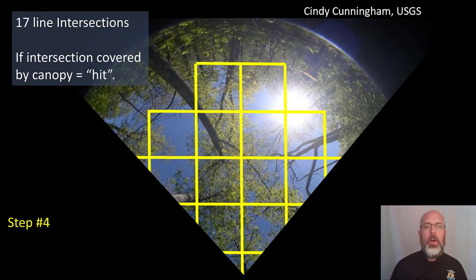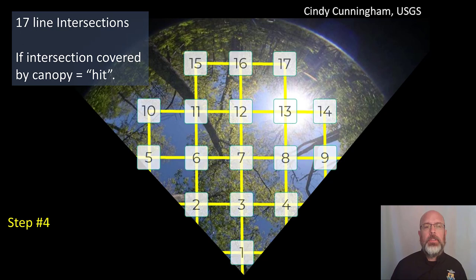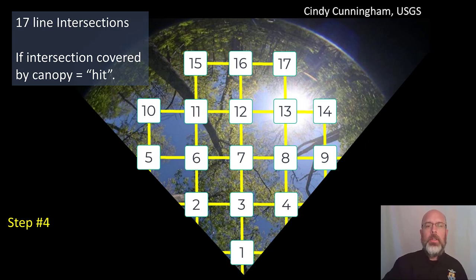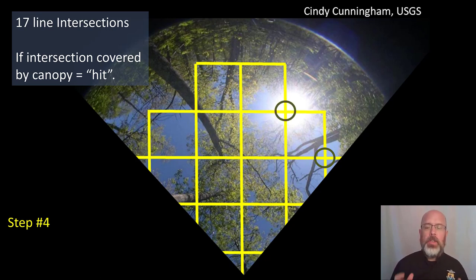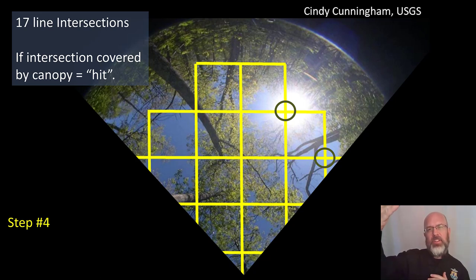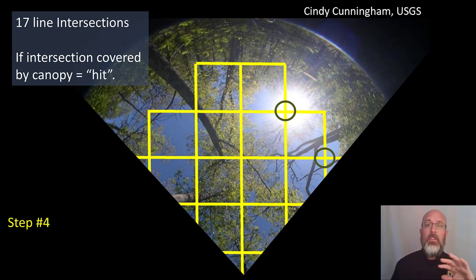Looking at the line intersections, there are 17 line intersections. If any of those intersections are covered by vegetation, that is considered a hit. One particular intersection shown is open sky — no vegetation cover — so that is not a hit. Another intersection shows glare from the sun. You want to be sure when taking these measurements that you're avoiding that glare; you may have to position your hand over the reflection to eliminate it. After doing so, notice there was no vegetation there either.